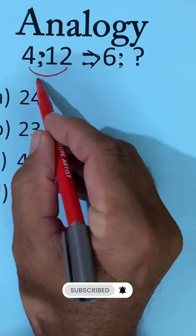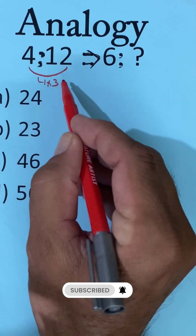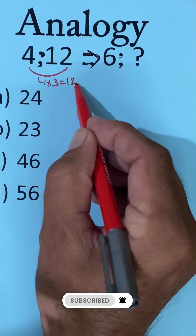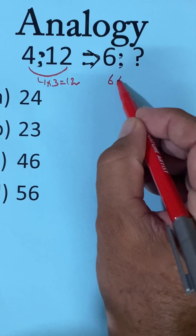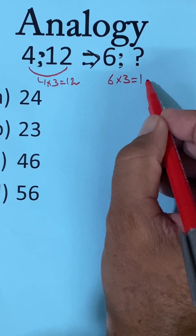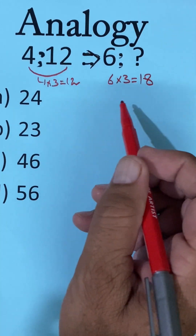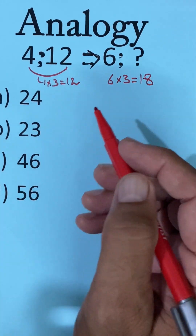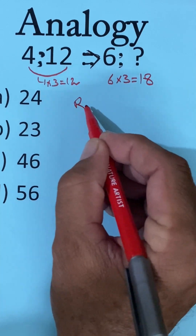4 into 3 is equal to 12. 6 into 3 is equal to 18, which is not in the given option. Therefore, it is rejected.